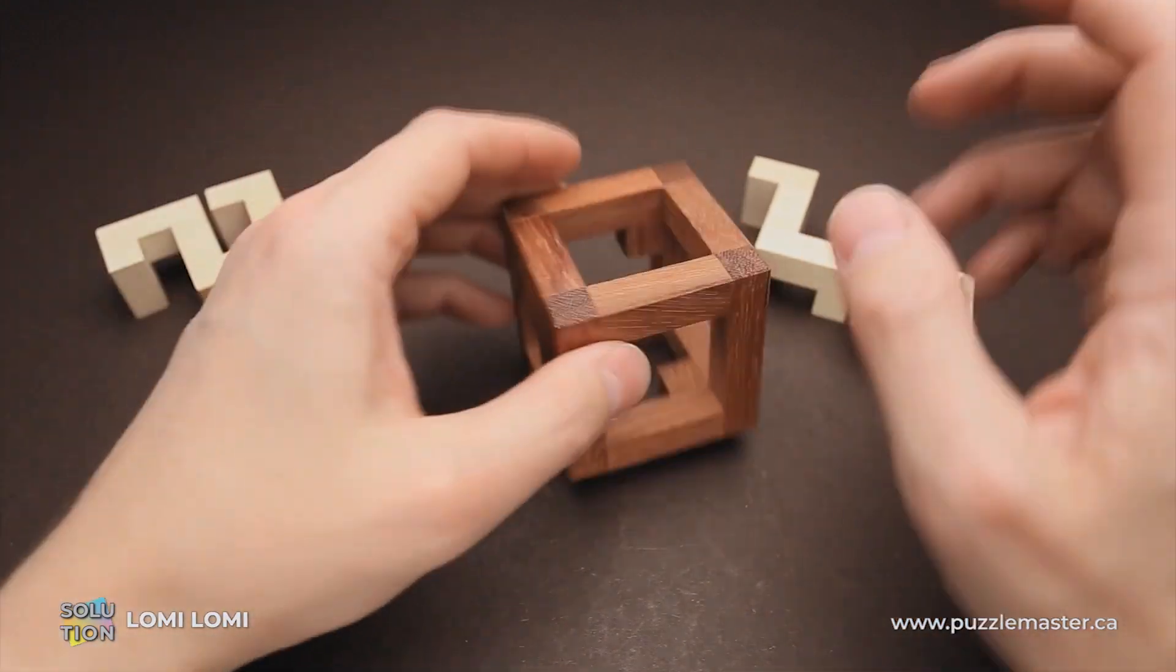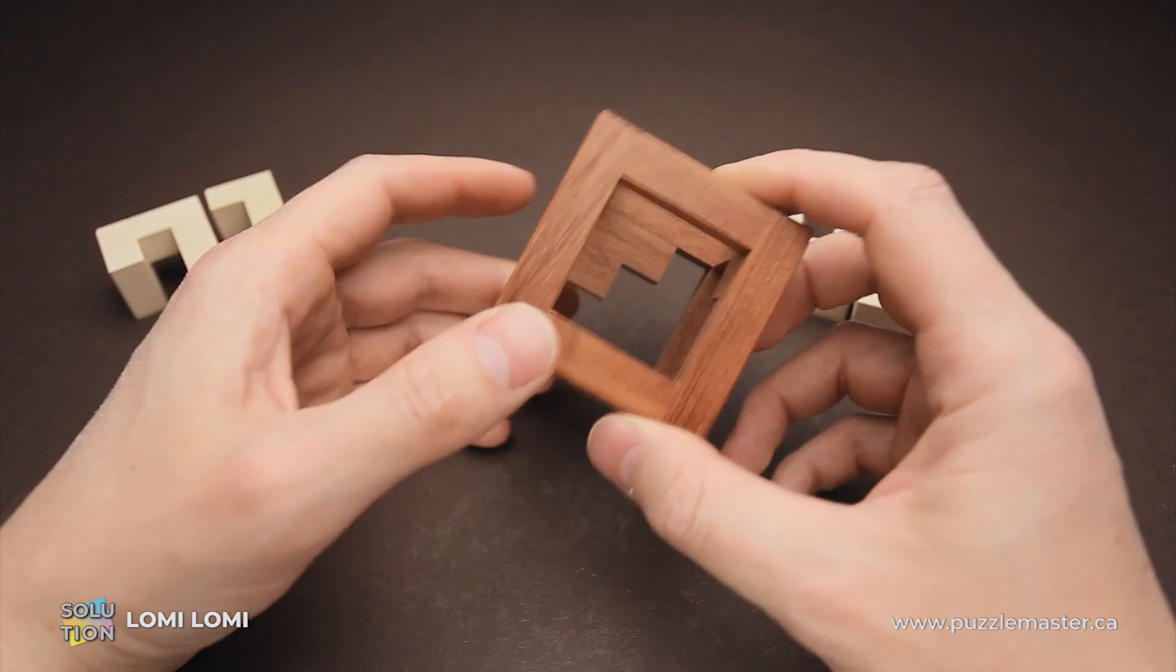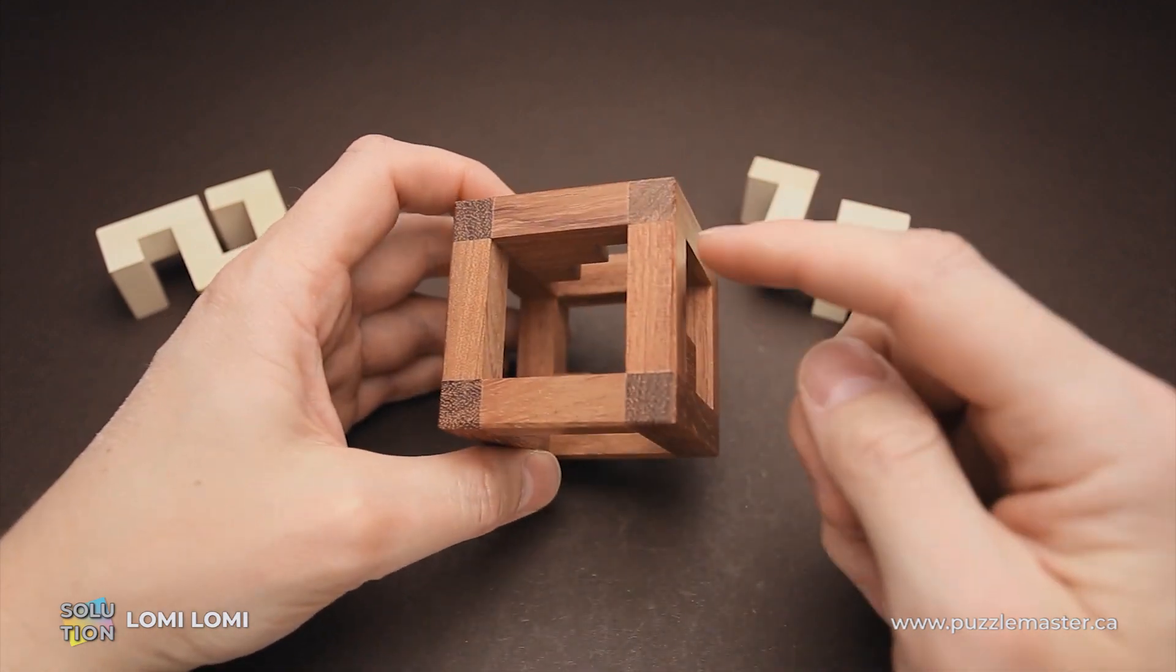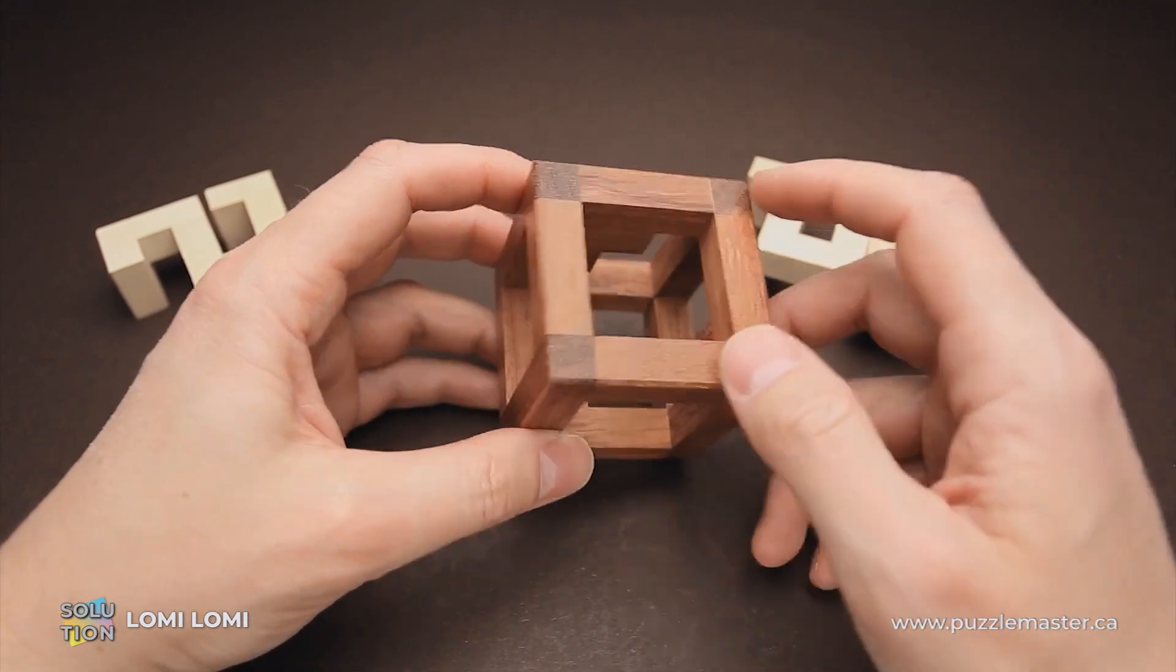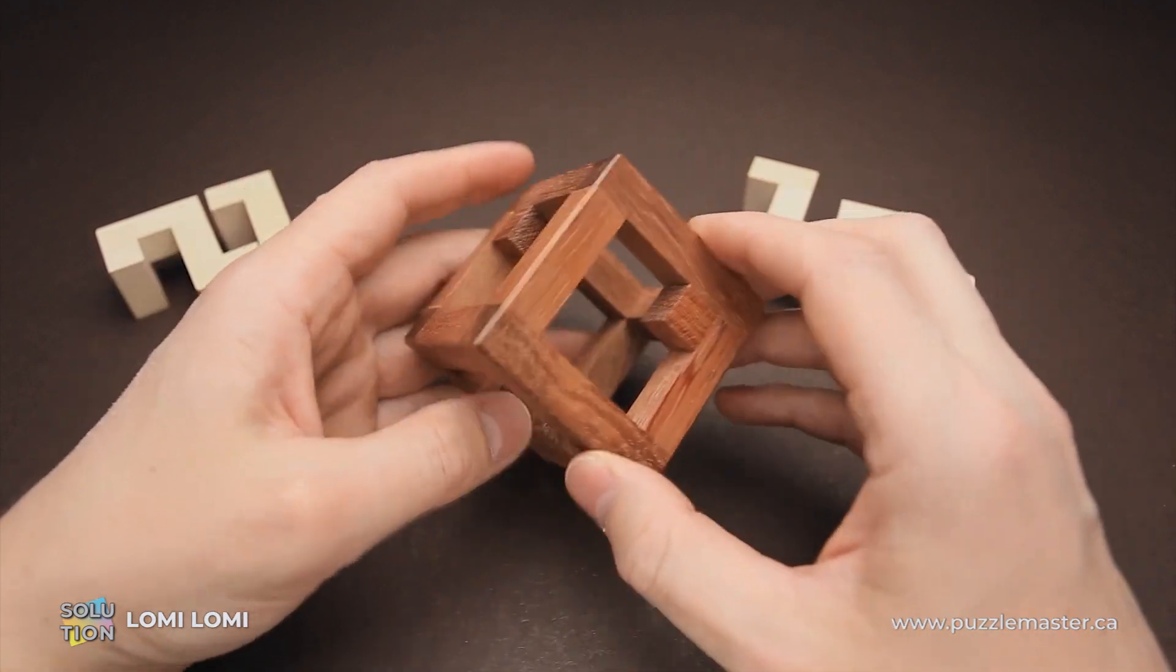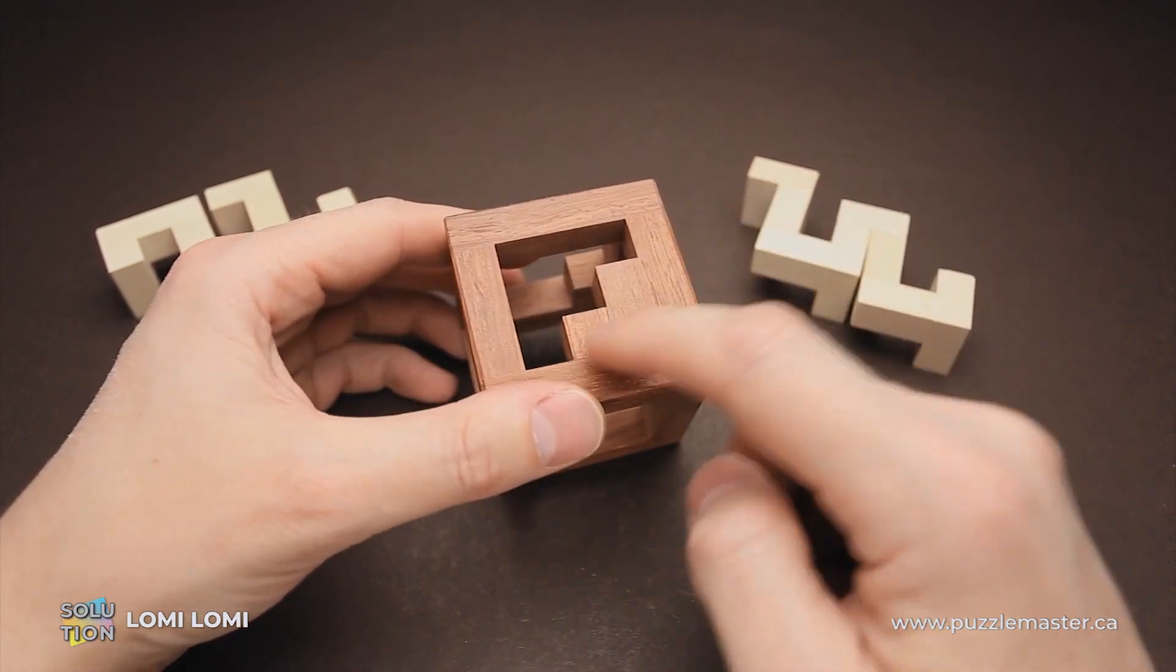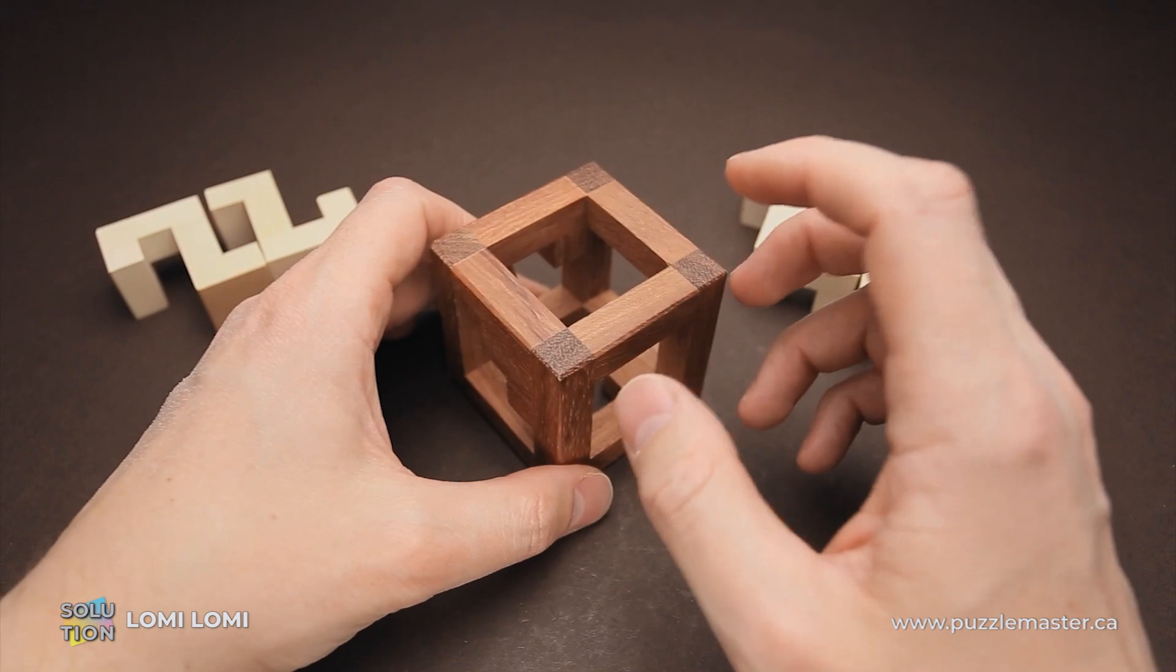When you take a closer look at the frame, you'll find it has a five by five by five shape with a three by three by three opening. On three sides, it's a full opening, but on the other three sides, there is a restriction. Here there are three voxels restricting the entrance to the frame.